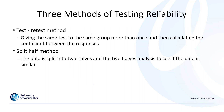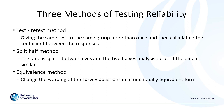The final common method of testing reliability is the equivalence method. This involves changing the wording of survey questions into a functionally equivalent form — so asking the same question in two different ways. This can be useful to overcome the practice effect where people respond the same way from memory. However, there are challenges in ensuring the questions actually elicit identical information, because asking something from a slightly different angle may produce a slightly different response.